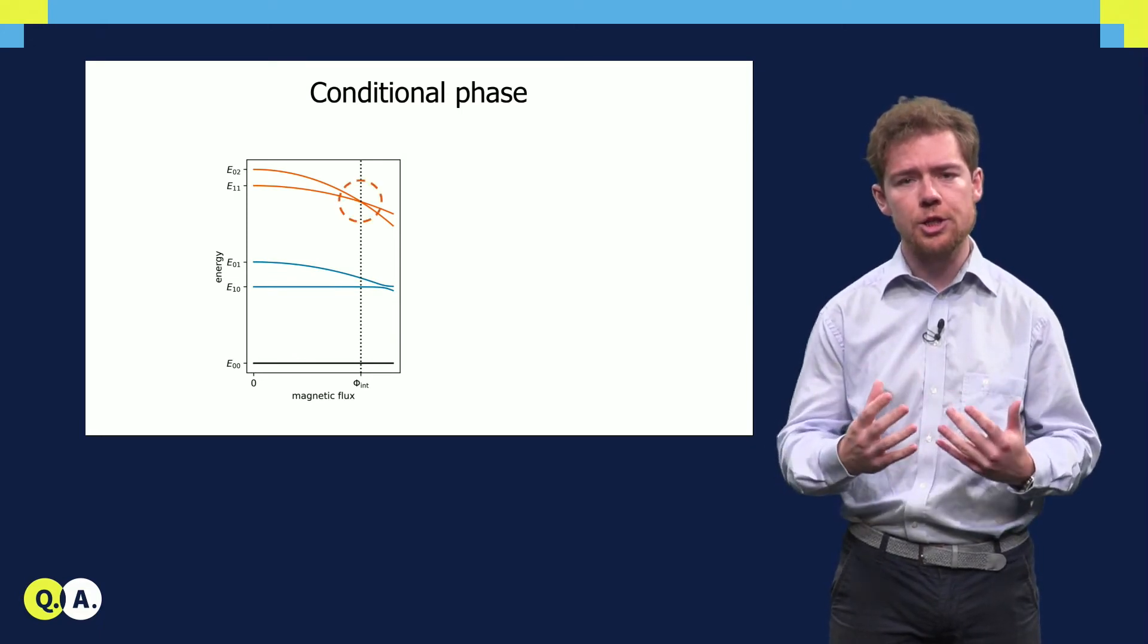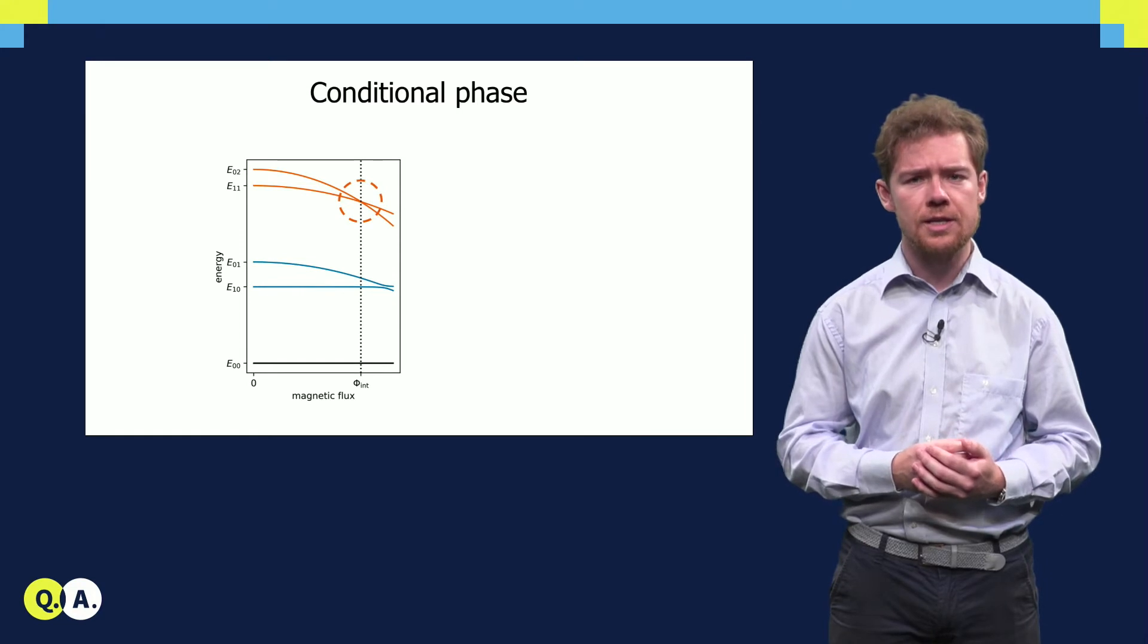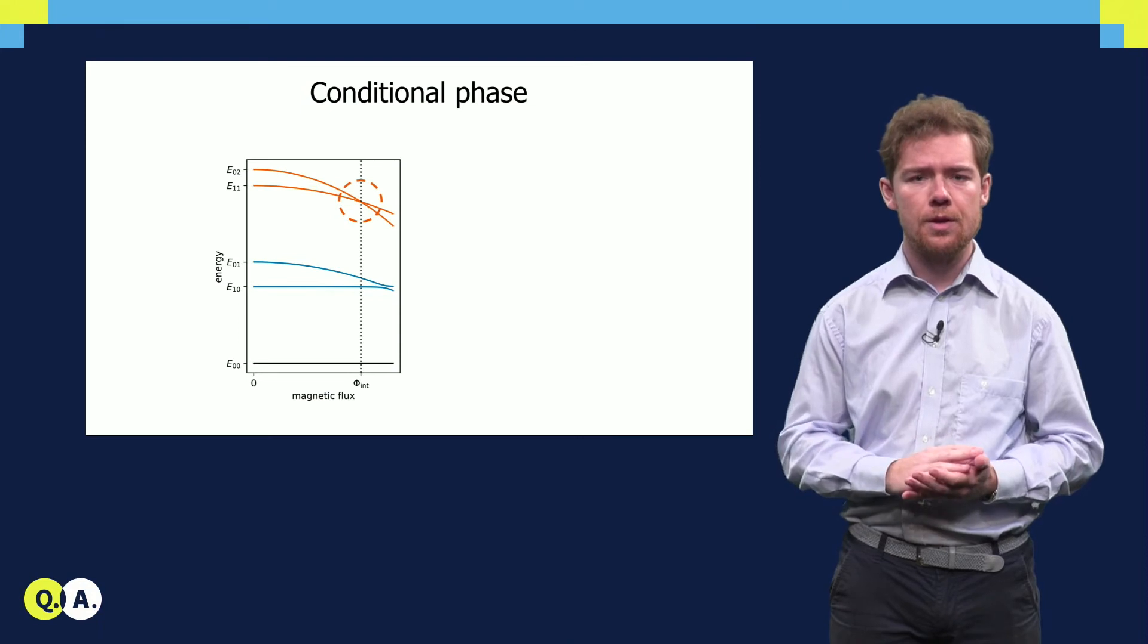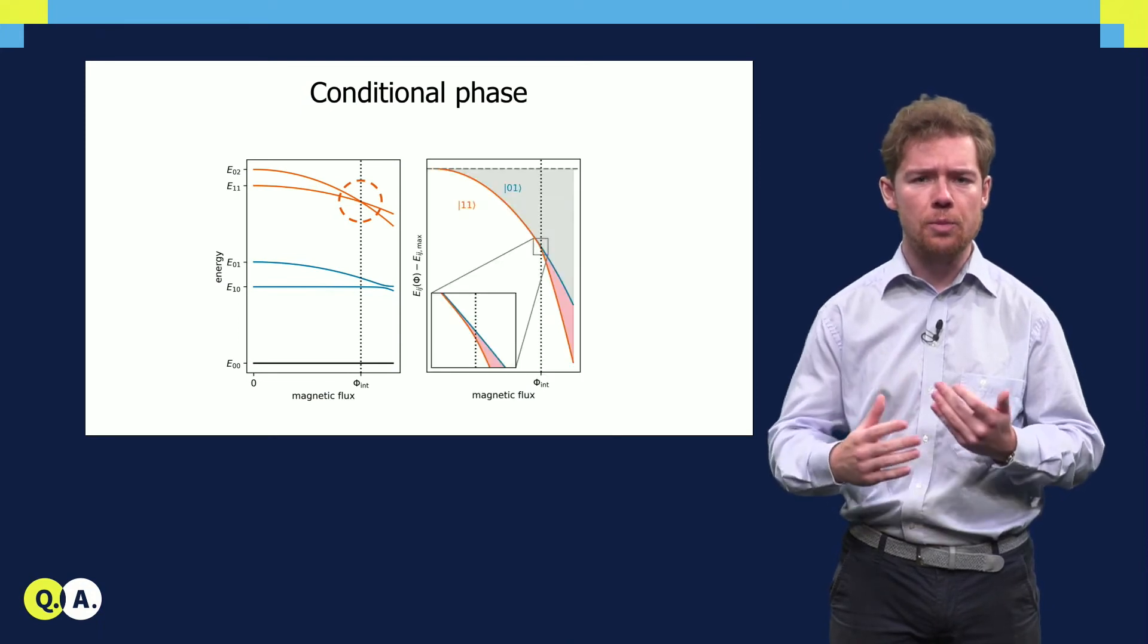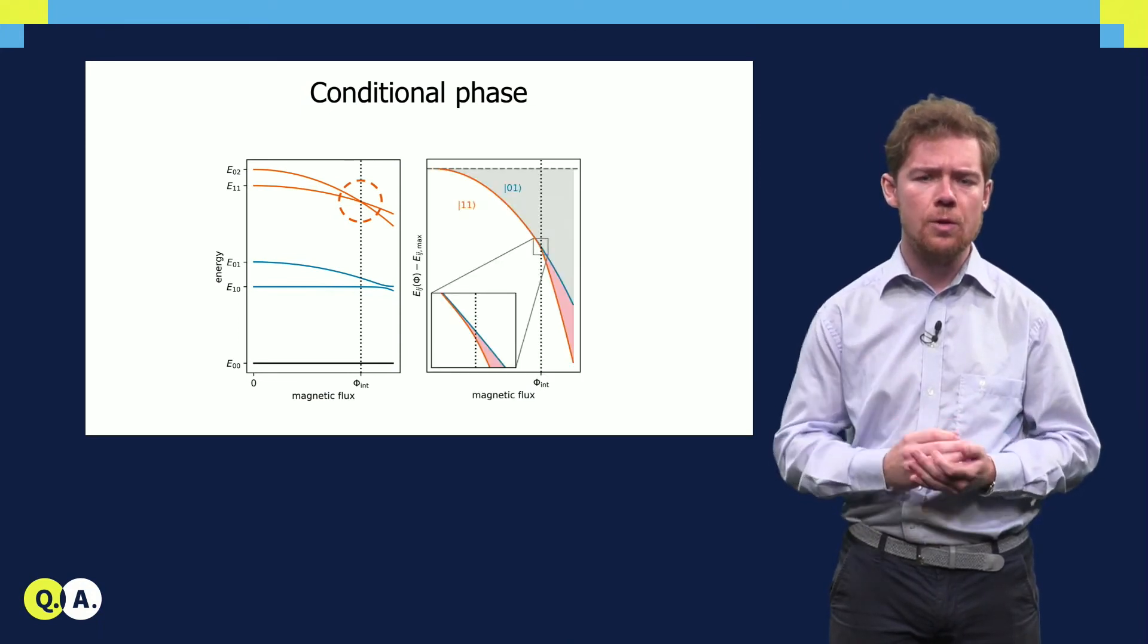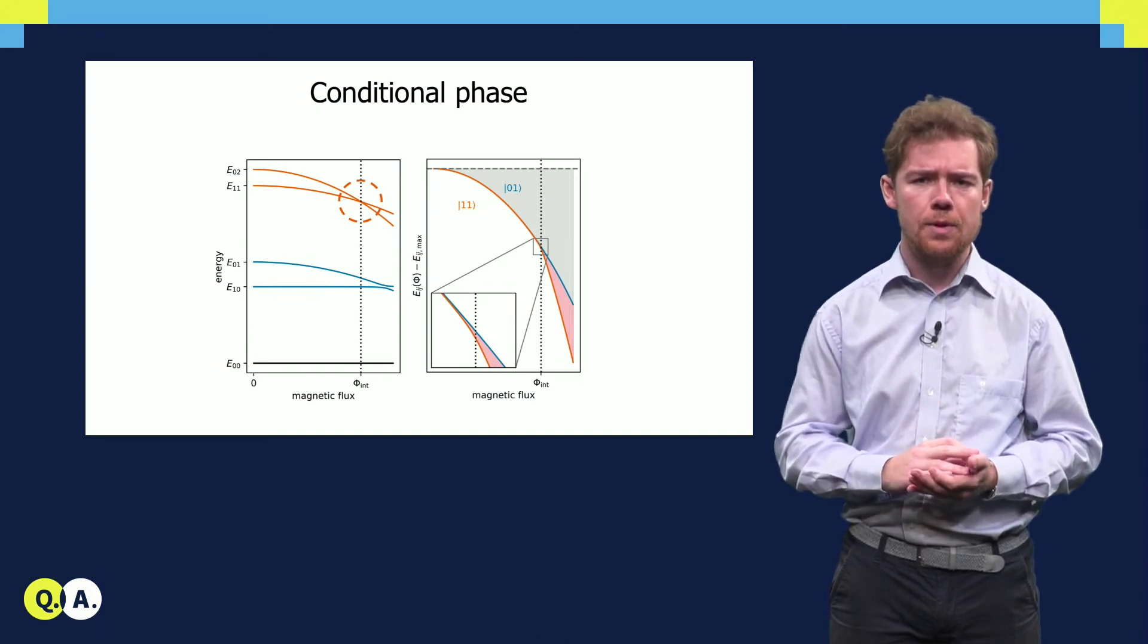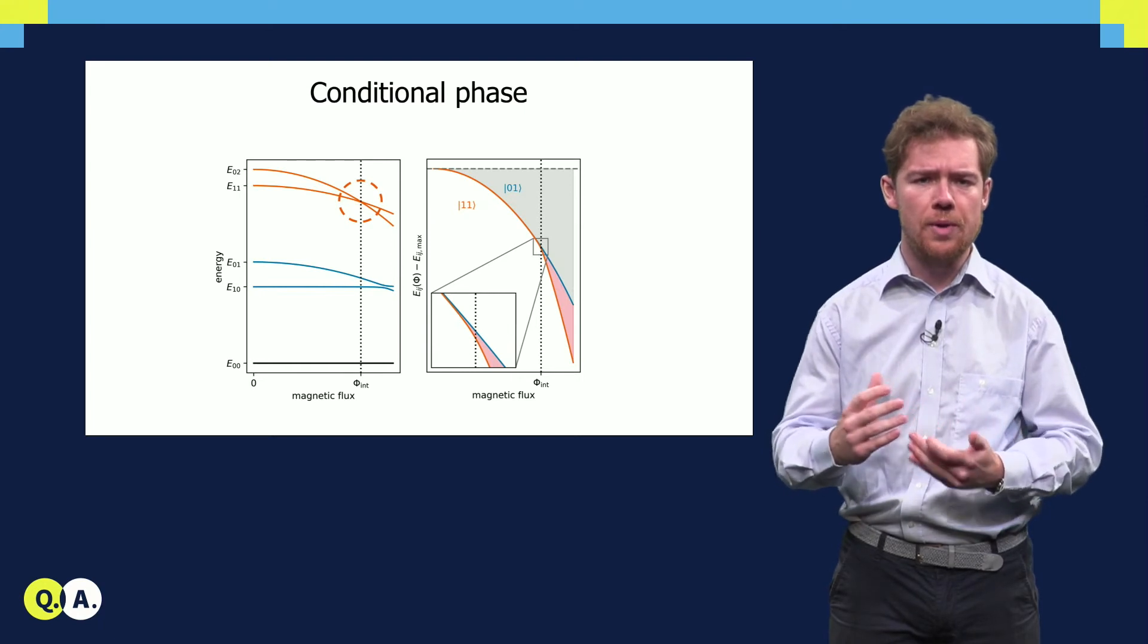The interaction that is used to perform a c-phase gate is an avoided crossing between the 1-1 and 0-2 state. The amount of phase that the target qubit picks up is most evident when the 1-1 and 0-1 level diagrams are overlaid. By expressing them in terms of detuning with respect to their maximum energy,